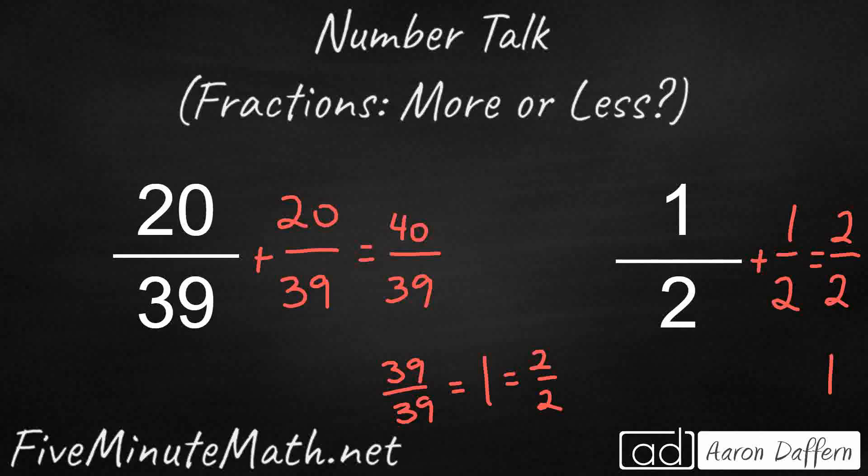Which means I'm thinking that my 20 39ths is going to be a little bit bigger than 1 half because when I doubled 1 half, I went to one whole. When I doubled 20 39ths, I got just a little bit bigger than one whole. So I'm thinking my 20 39ths is going to be larger.